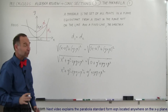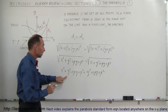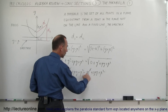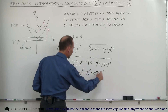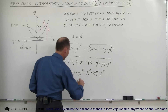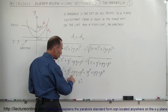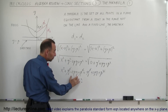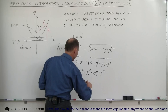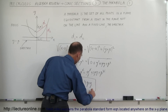Now the fun begins, because we can simplify the equation. We see y squared on both sides — that cancels out. We see p squared on both sides — that cancels out. Now all we have to do is move the minus 2py term to the right side, so we have x squared equals 2py plus 2py, giving us x squared equals 4py. That is the general equation of a parabola.